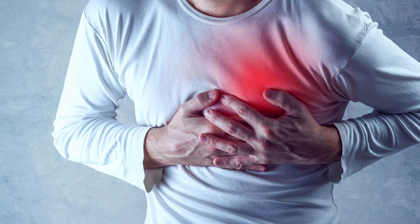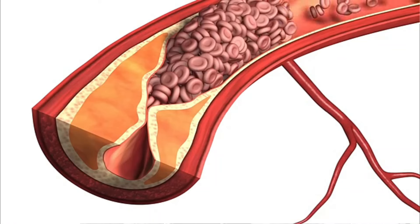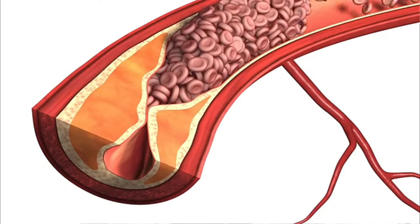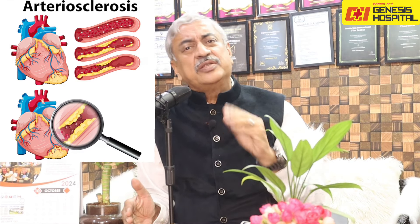You get chest pain whenever the heart rate increases. And if this plaque sometimes breaks or cracks, by the normal healing process platelets come and get deposited, causing obstruction — or a plaque can get dislodged into the coronary artery, completely stopping the blood supply to that muscle. That's what is called myocardial infarction, or a heart attack. This process of deposition of cholesterol and plaque formation is called atherosclerosis. It takes place in majority of arteries, but when it occurs in coronary arteries, you develop symptoms of coronary artery disease.